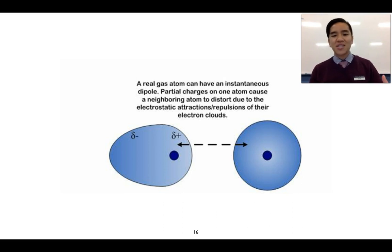This is what we call a temporary dipole. It's temporary because it doesn't stay permanent, and it's a dipole because it consists of two poles: one pole which is partially negative, one that's partially positive.